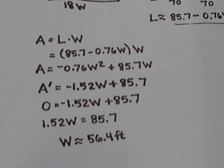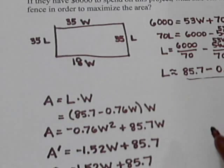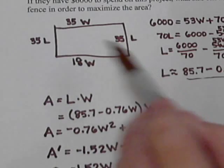So that tells us that these two sides are going to be 56.4. What about the other two sides?